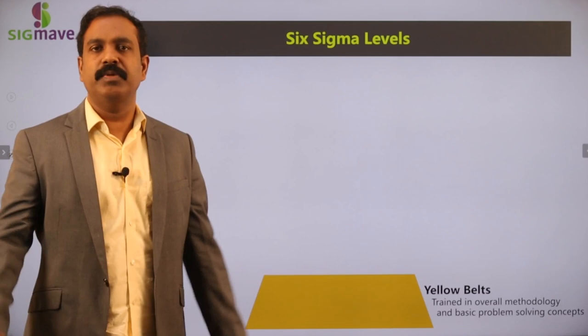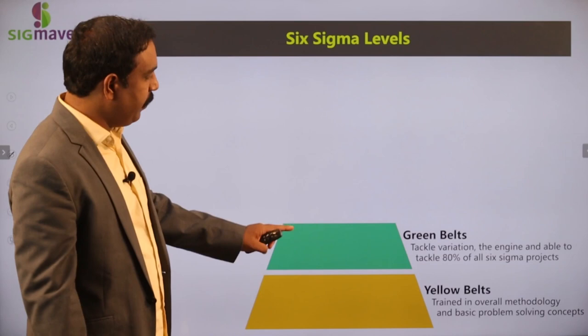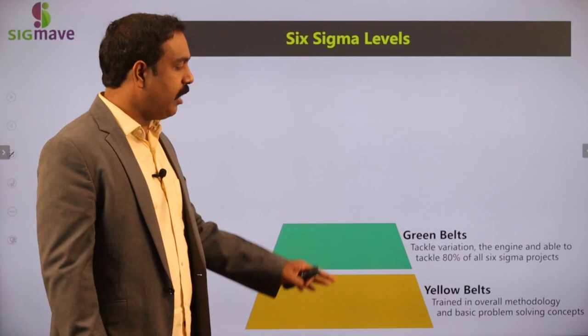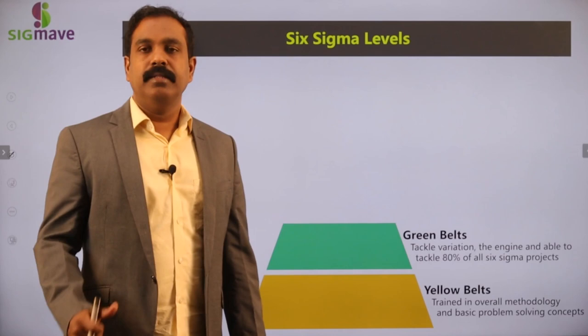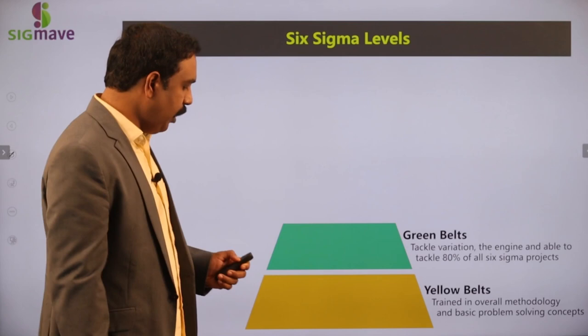Then comes the next level: green belts. Green belts are the real engine of the Six Sigma projects and they are able to tackle almost 80% of the Six Sigma projects. They know statistical tools also, and they are the real force in the Six Sigma projects.